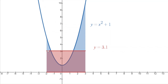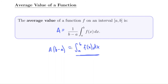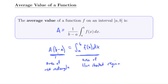Why does this work? If we call the average value a, and multiply both sides by (b minus a), we get a times (b minus a) equals the integral. The value of the integral is the area of the blue shaded region. And a times (b minus a) — the height times the length — is the area of the red rectangle. So a is exactly the value that makes the rectangle's area equal the blue shaded area.